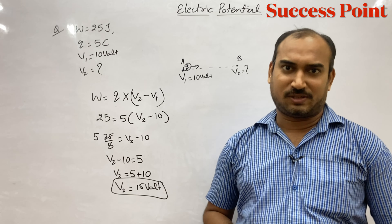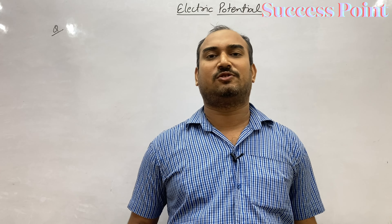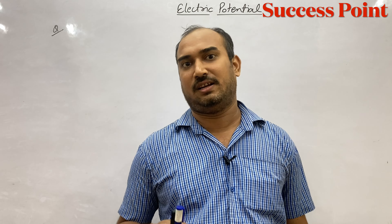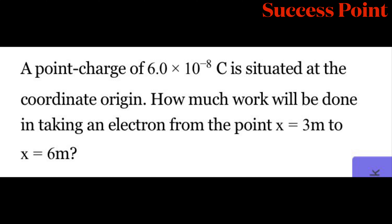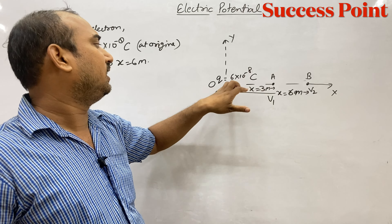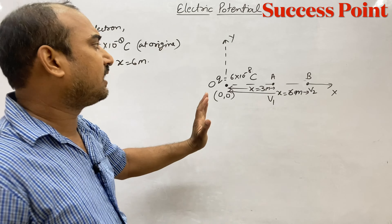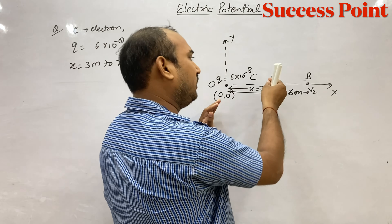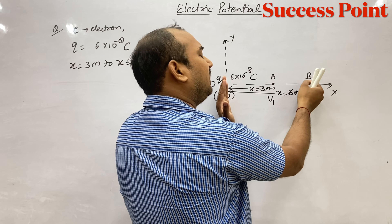Ab dekhiye bacho, electric potential ka next question yeh hai ki: a point charge of 6 into 10 to the power minus 8 coulomb is situated at the coordinate origin. How much work will be done in taking an electron from point x = 3 meter to x = 6 meter? To dekhiye bacho, yeh question hamko diya hai ki a charge Q = 6 into 10 to the power minus 8 coulomb ka hai.